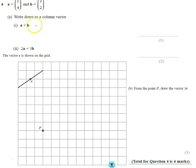Question on column vectors. Our first vector a is 1, 4 and b is 3, 2.